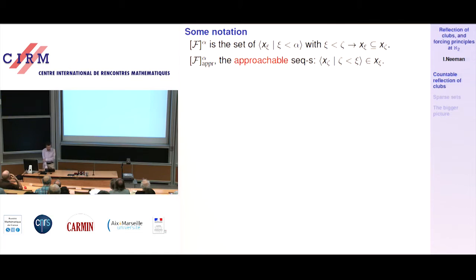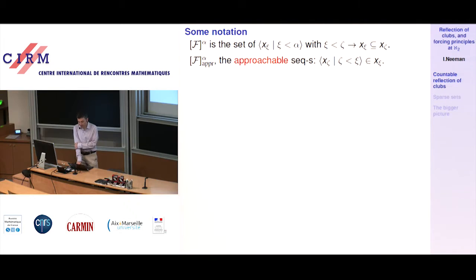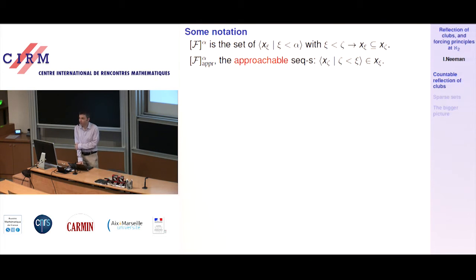Then what I'll call F^alpha the approachable — these are the approachable sequences. Again increasing, but I want to ask a bit more: the sequence up to xi is an element of x_xi. This is the same approachability studied in countable and uncountable structures — increasing sequences of elements of F with x_zeta for zeta less than xi always an element of x_xi.